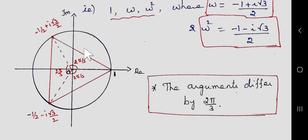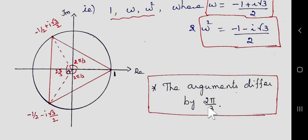The cube roots of unity divide the unit circle into 3 equal parts. Joining all three roots gives an equilateral triangle. The arguments differ by 2π/3, since the general form for nth roots is 2π/n, and here n = 3. The first root is 1; the second root is obtained after a rotation of 2π/3, and the third root after one more rotation of 2π/3. These are the cube roots of unity: 1, ω, and ω².